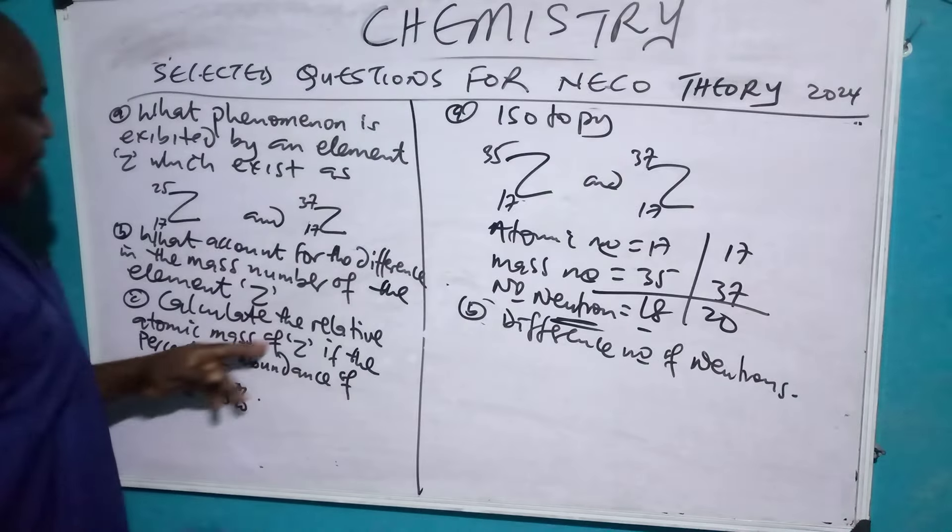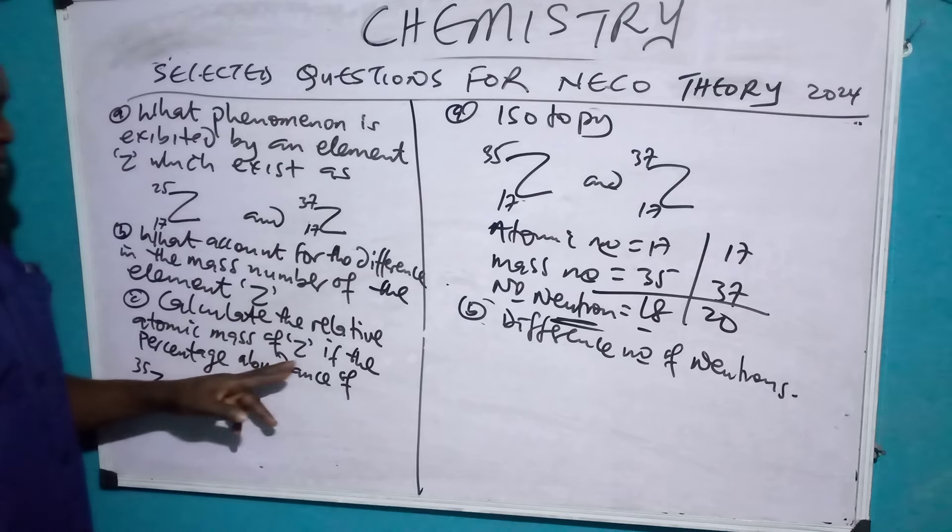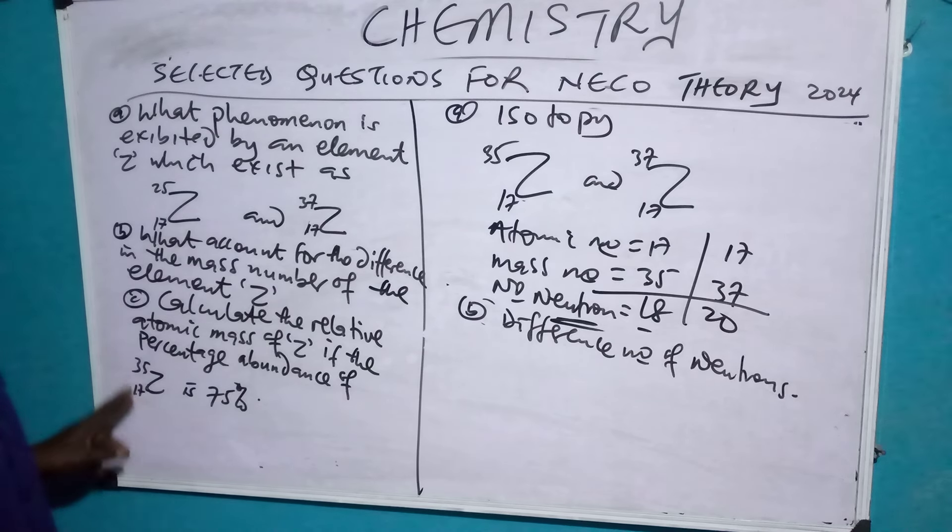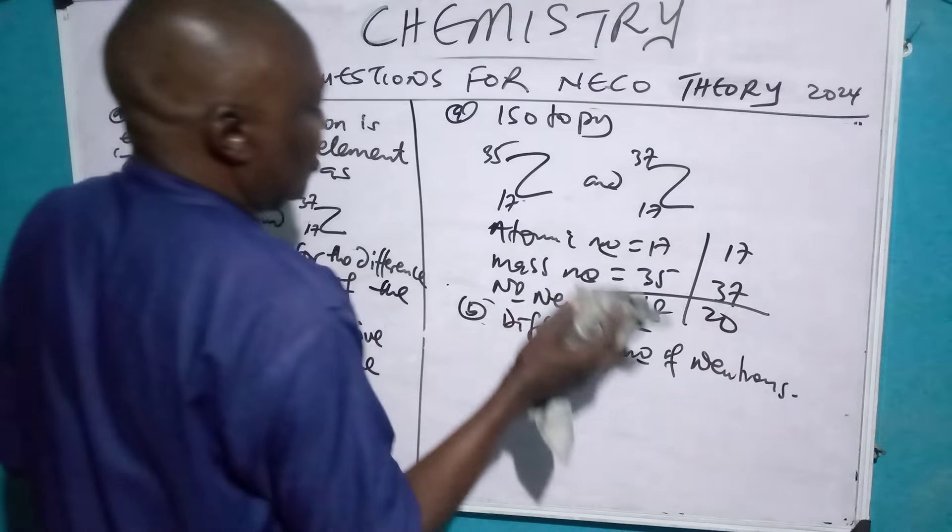Then, the last one, calculate the relative atomic mass of Z. If the percentage abundance of Z 35 is 35%. This one is trying to be technical, but it is solvable. So, how do we go about it? Let us clean these ones on top.